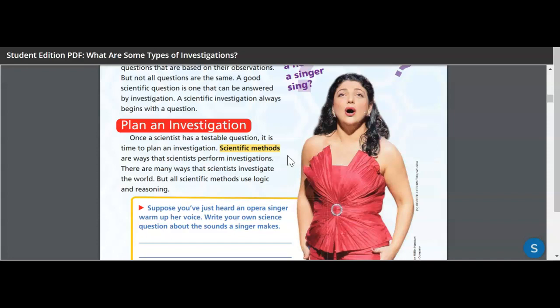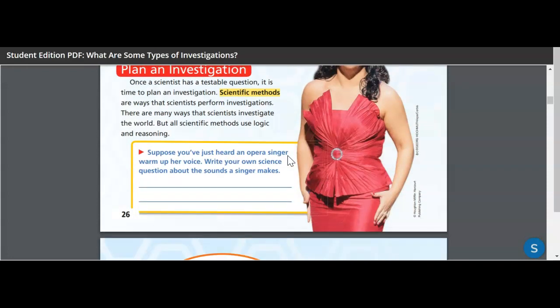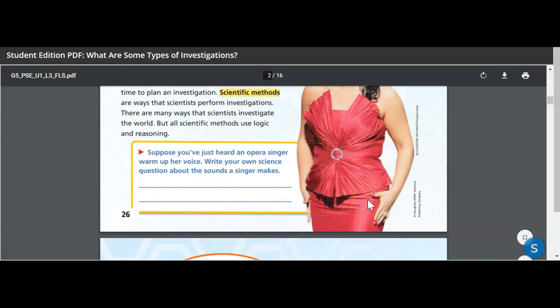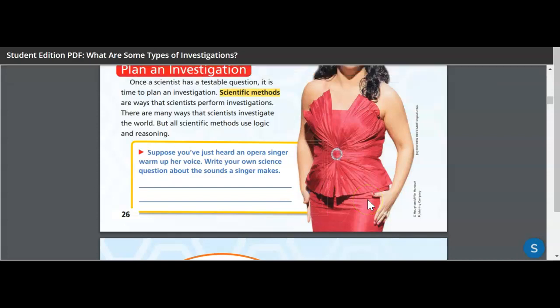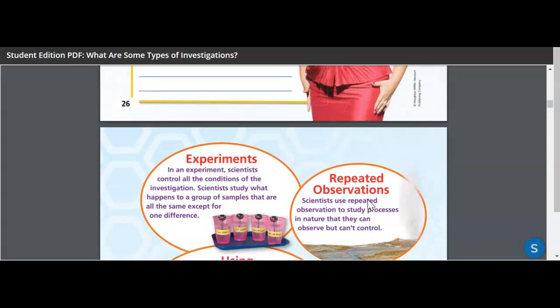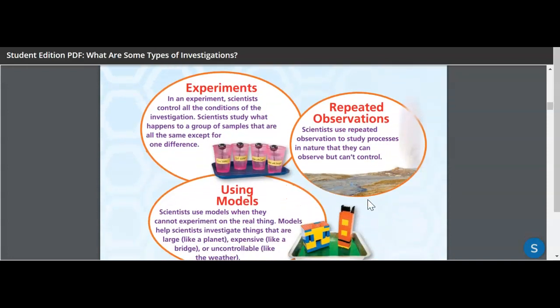So how they go about those investigations? There are many ways that scientists investigate the world, but all scientific methods use logic and reason. So feelings don't come into it. Bias shouldn't come into it. They use specific logic and reasoning in those scientific methods and how they're answering their questions. This is one of the sections you need to fill out in your book for your activity for follow along. So we're moving on to the next page.